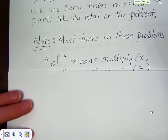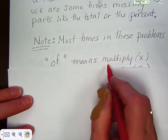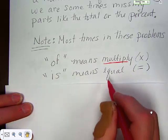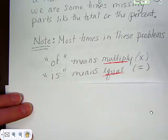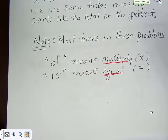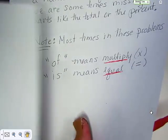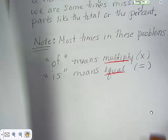Most times in these problems, the of is going to mean multiply, and the is is going to mean equal. So that's something that's really important when you're reading through the problem. You will probably see the words of or is in the problem, and it will make you go, oh yeah, I remember we use is as equal and we use of as multiply.